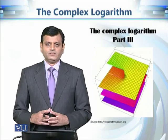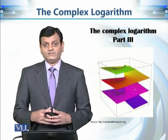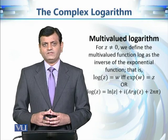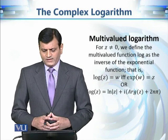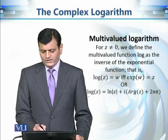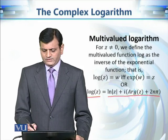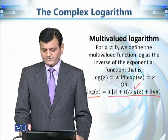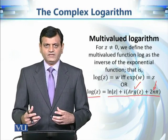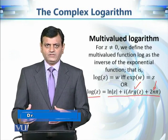This is the third part of our discussion on the complex logarithm. So far we have defined what is this multi-valued function, the complex logarithm, and then we discussed its branches. So let's have a look at how we defined this multi-valued logarithm. It is defined as: log(z) = ln|z| + i(Arg(z) + 2nπ). When n varies, the output of log(z) varies.